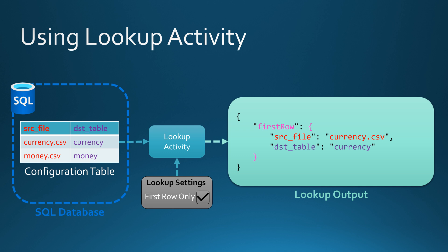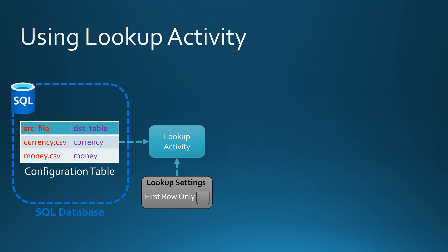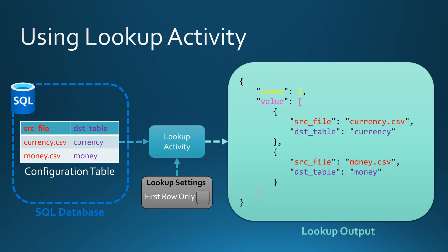These two values are wrapped in an object called 'first row'. If we uncheck the first row only setting and run the lookup activity again, we get a different output — a count of how many rows were retrieved and a value array containing all the retrieved rows. In this case we get both the currency and money configuration from the configuration table. Now we have a core understanding of how the lookup activity works.